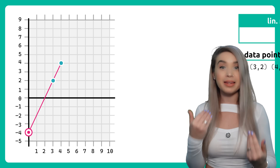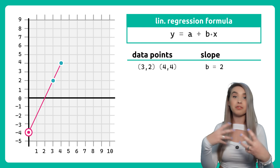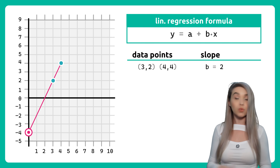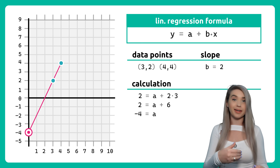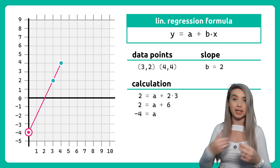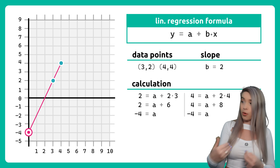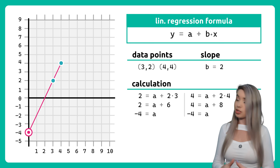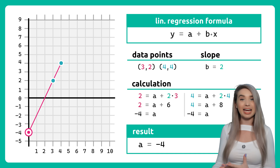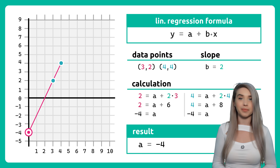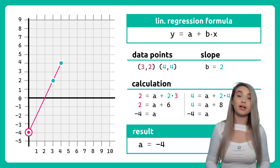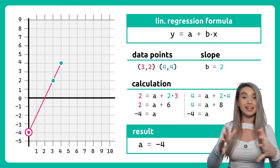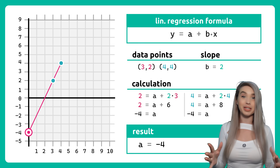We can calculate it mathematically by filling in one of our data points into the linear regression formula. We either get 2 equals a plus 2 times 3, or we get 4 equals a plus 2 times 4, which in both cases results in a equals minus 4.